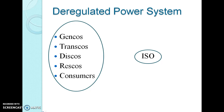Next, Consumers. A consumer is an entity consuming electrical energy from the system. In a regulated market, the consumer has no choice. In a deregulated market, a customer has several options for buying electricity. It may choose to buy electricity from the spot market by bidding for purchase, or made directly from a GenCo, or even from the local distribution company.